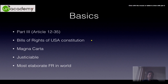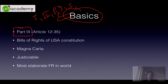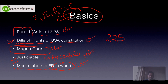Moving forward, we start with the basics of fundamental rights. It is covered in Part 3 of the Indian constitution under Article 12 to Article 35. It has largely been incorporated from the Bill of Rights of the USA constitution. It is also called the Magna Carta of the Indian constitution because it is justiciable or enforceable in a court of law. India has the most elaborate fundamental rights description in the entire world.